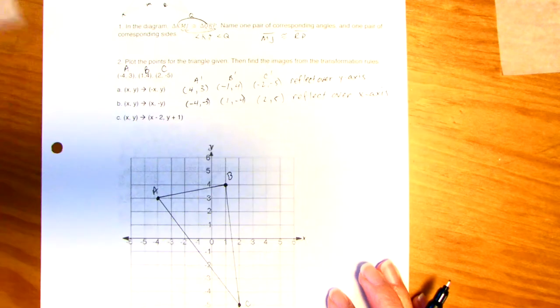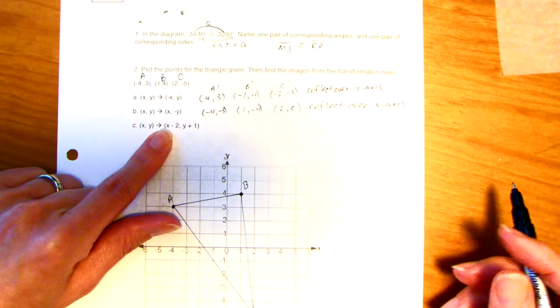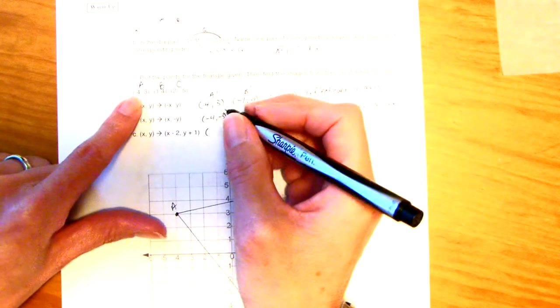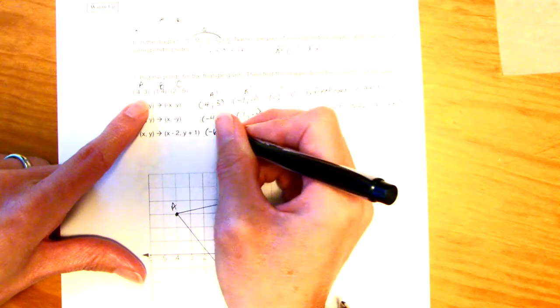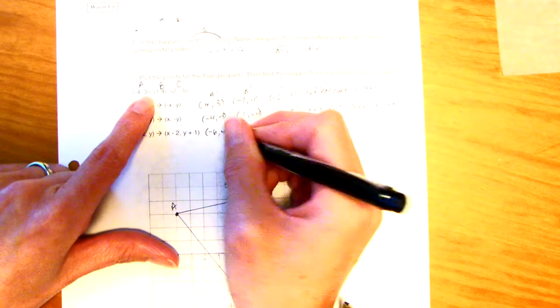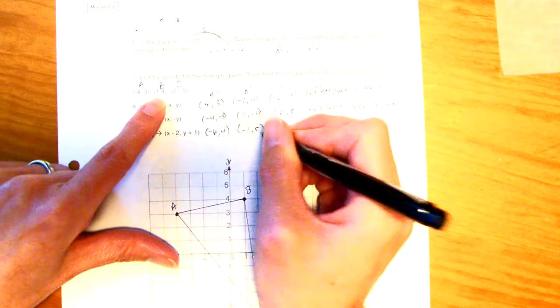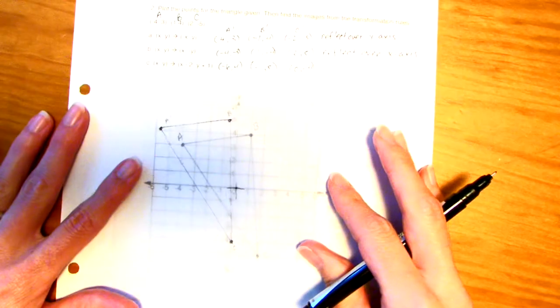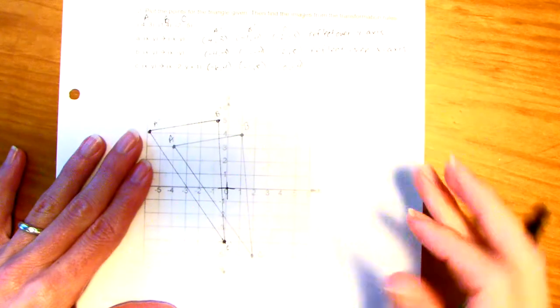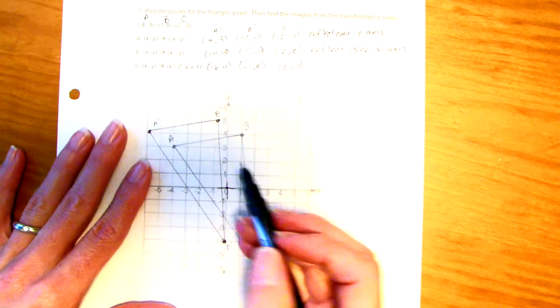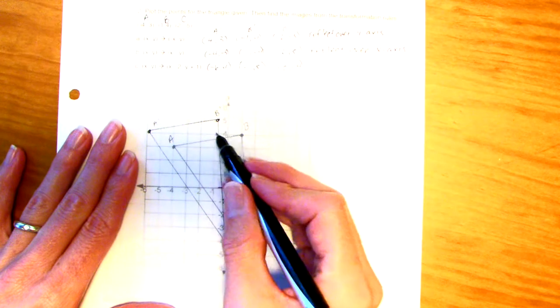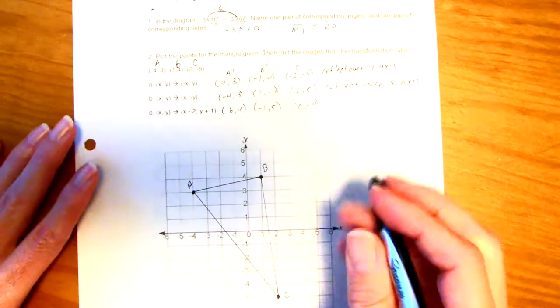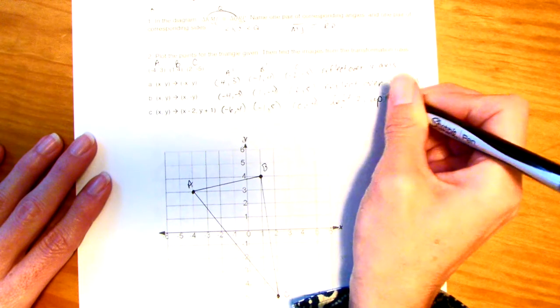This one is a simple translation. It's a slide. It's either going to go up or down or left or right. This means I'm going to take each X value and subtract 2 and take each Y value and add 1. So, my A prime is going to be negative 6, 4. I'm subtracting 2 from the X and adding 1 to the Y. And then this will be negative 1, 5. And this will be 0, negative 4. If you look, what's happening? This graph is going to the left, two spaces, up 1. Look at the B. Left 2, up 1. Look at the C. Left 2, up 1.